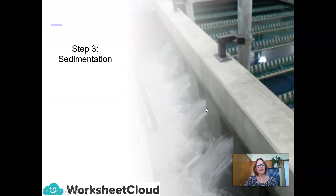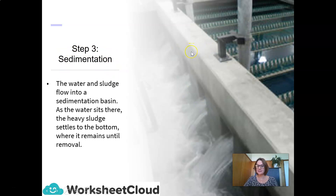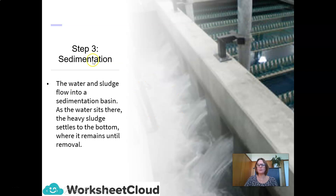Step three is sedimentation. The water and the sludge flow into a sedimentation basin. As the water sits there, the heavy sludge settles to the bottom where it remains until removal — it is scraped away and removed. Different countries use different processes to get rid of the sludge.